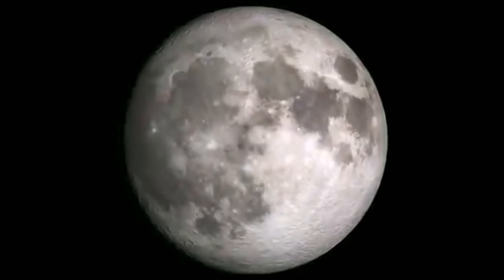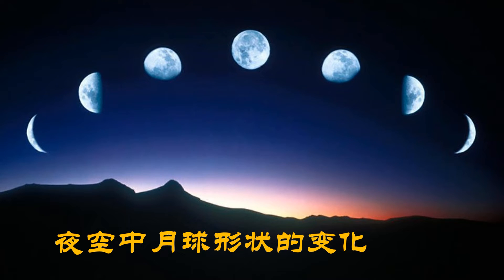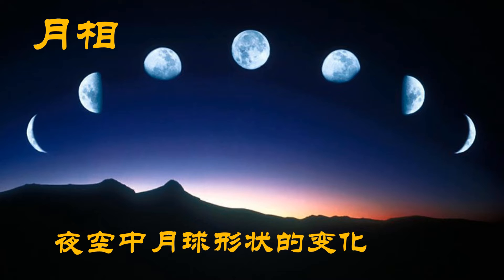月球光亮的部分不同，月球的形状不同。是的——夜空中月球形状的变化，这个现象我们称之为月象。月象是夜空中月球形状的变化，指的是夜晚我们能够看见光亮的月球的部分。那月象是怎么发生的呢？(The bright portion of the Moon differs, and the Moon's shape changes. This phenomenon is called lunar phases. Lunar phases refer to the changes in the shape of the bright part of the Moon we see at night. How do lunar phases occur?)